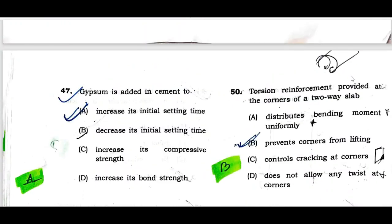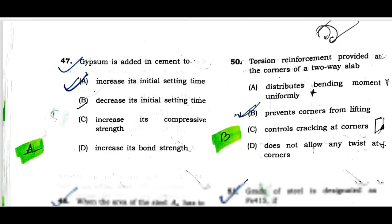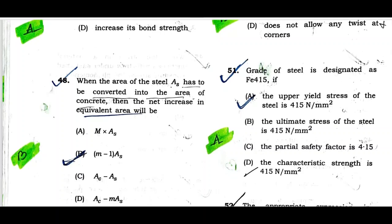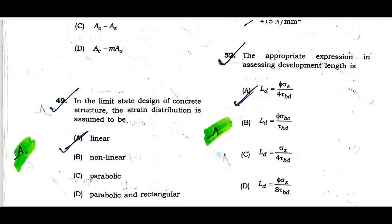Question number fifty: Torsion reinforcement provided at the corners of a two-way slab basically prevents corners from lifting. Option B is correct. Question number fifty-one: Grade of steel is designated as Fe415 if the yield stress of the steel is 415 Newton per mm². Option A is correct. Question number fifty-two: The anchorage length expression in terms of development length is 5σ_s divided by 4τ_bd.